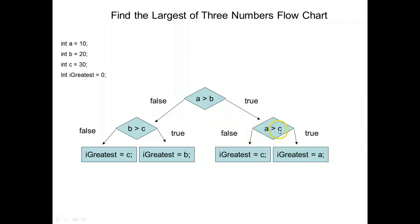If A is not greater than C, we can assume C is greater. Now let's come up here - if A is not greater than B, meaning B is greater than A, we would follow the false side.